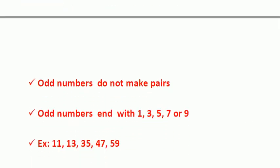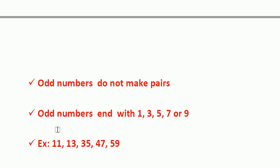The key points are: odd numbers do not make pairs, and odd numbers end with 1, 3, 5, 7, or 9.